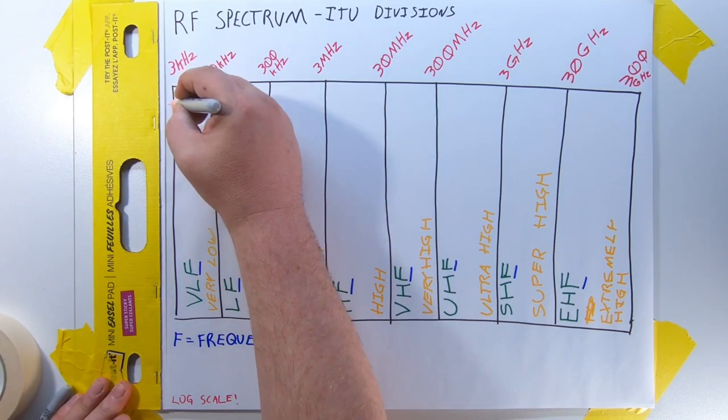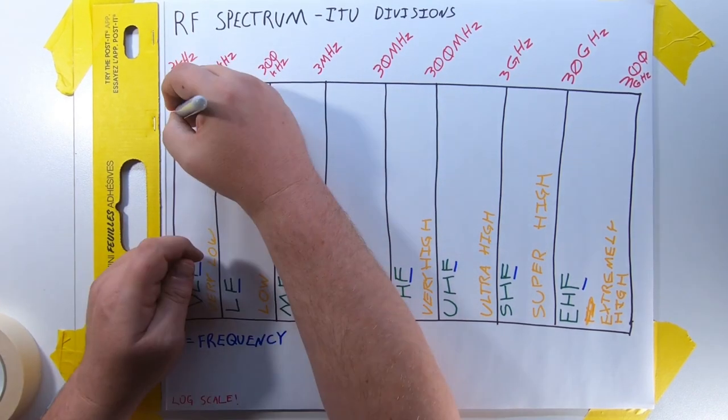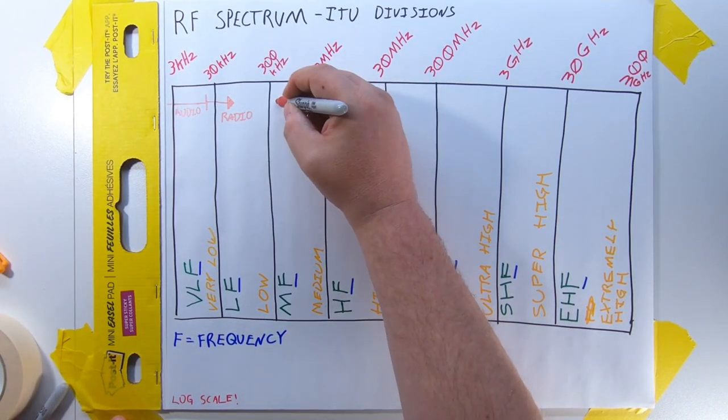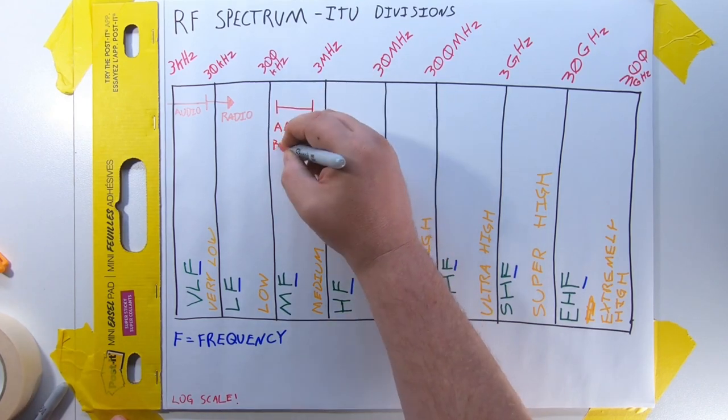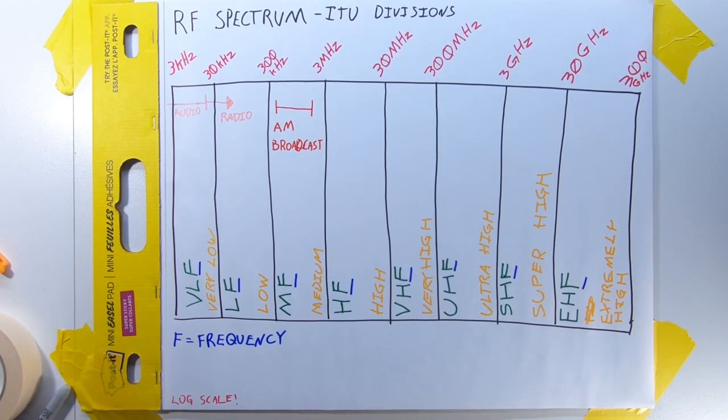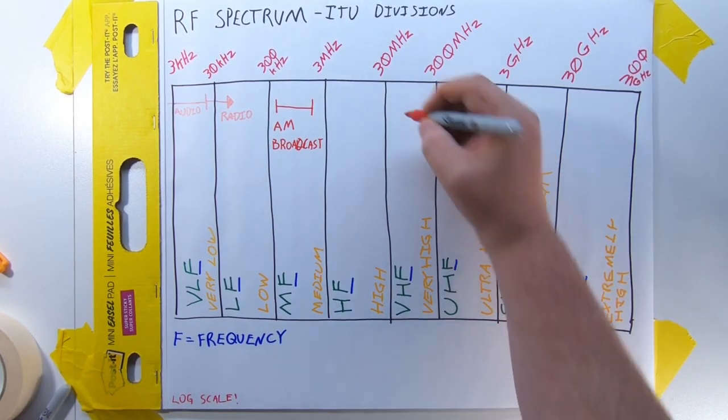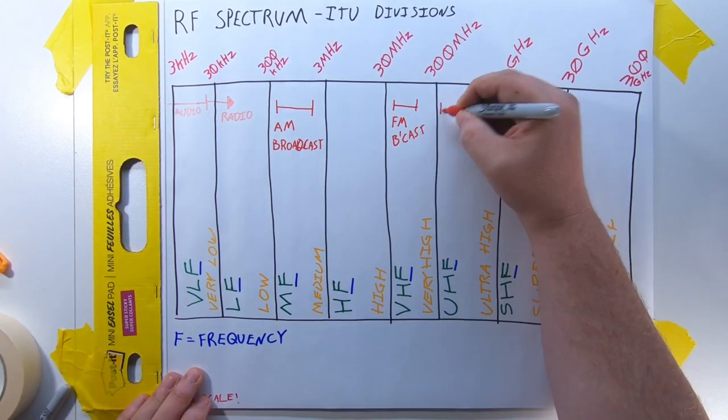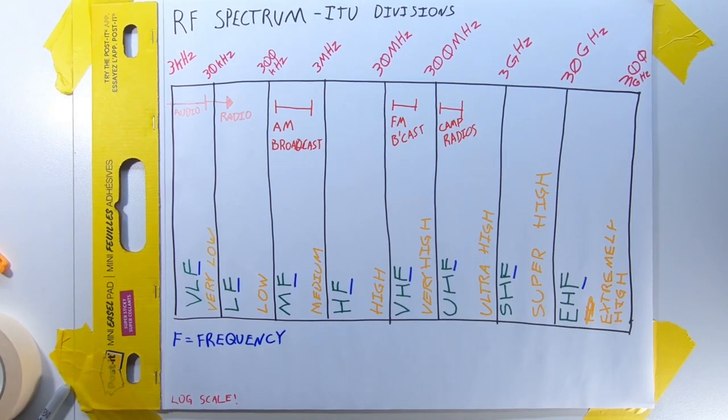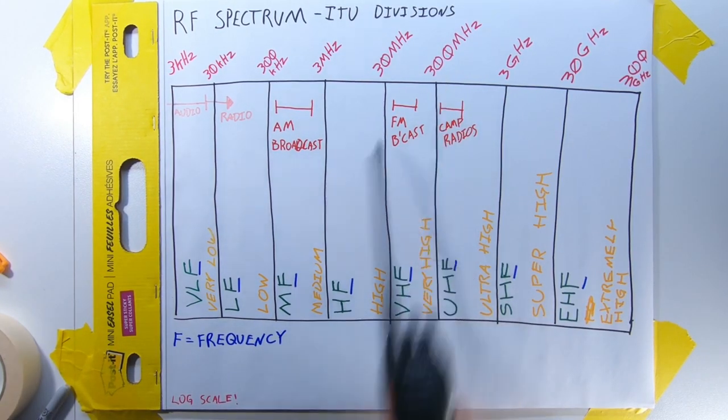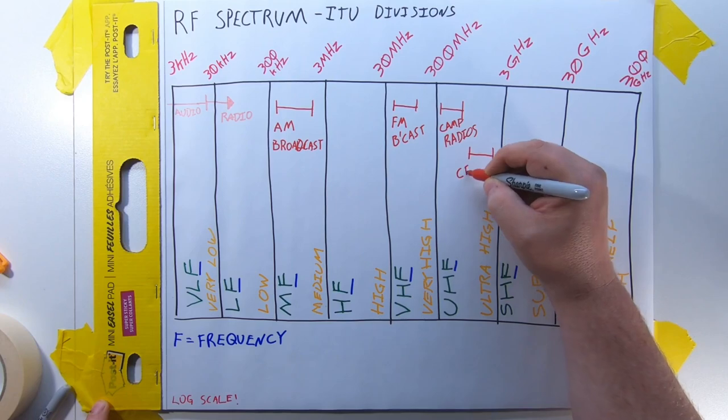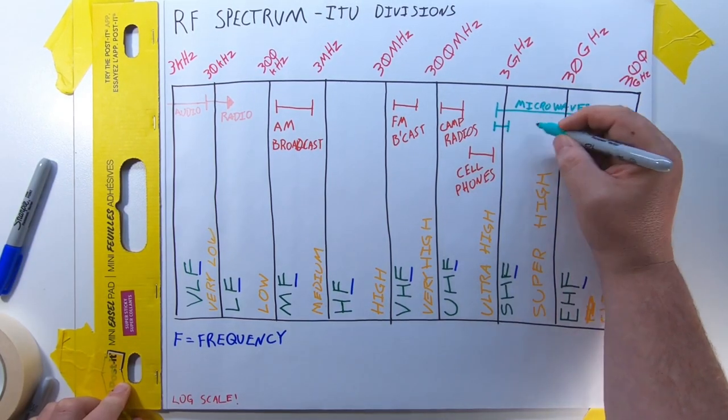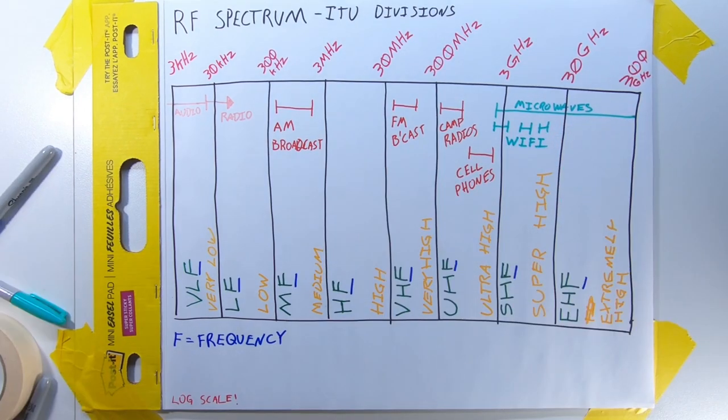We call the lowest part of this chart audio frequencies, because if we took that signal and played it out a speaker, we'd be able to hear it. The AM broadcast band, which is still useful despite what Tesla thinks, is in the medium frequency band. FM broadcast, which is where the station you'll be taking over on Saturday lives, is in VHF. The camp radios we use, they transmit and receive in the UHF part of the spectrum. Your phones live in the upper part of the UHF band. Microwaves and Wi-Fi live in a chunk of the SHF and EHF spectrum.